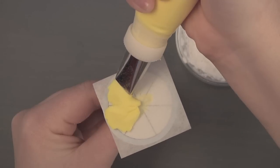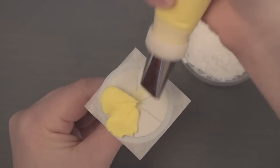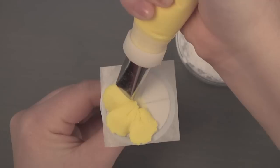Start the second petal by lightly touching the wide end of the tip to the center of the nail. Pipe a second petal. Repeat to make four remaining petals.